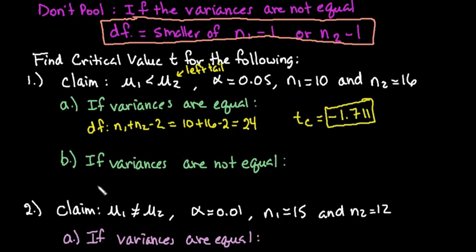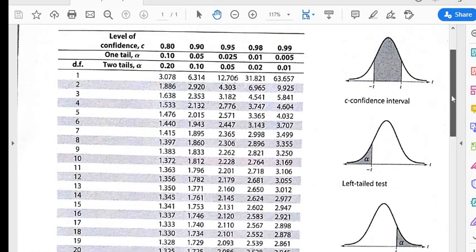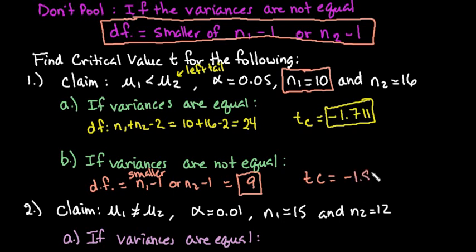If the variances are not equal, remember that our degrees of freedom for this one is the smaller of n1 minus 1 or n2 minus 1. So we would go with the smaller one. For this one, we can see that our smaller sample size is 10. And so we would do 10 minus 1, which is 9. So we would go with the 9. So again, because of the fact that it's left-tail, we are going to report the negative value. We would still be working in the same thing, the one-tail 0.05. But this time, we would just go down to the 9, which is 1.833. And so we would say that it's negative 1.833.